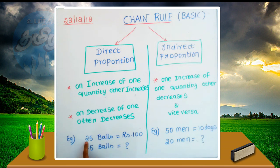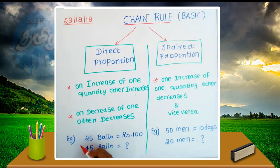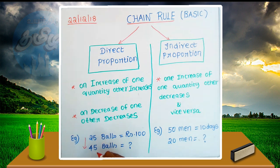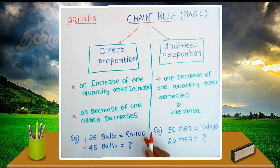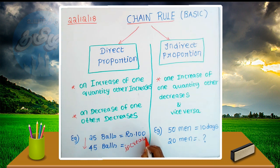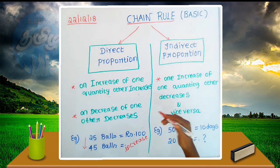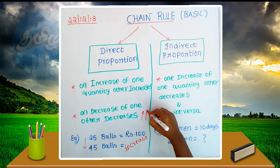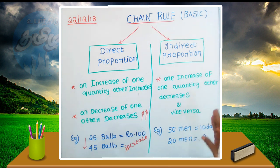For example, there are 25 balls worth 100. Then 45 balls are available. If you look at the ball quantity — when the number of balls increases, the value also increases. That is what we say: if the ball increases, the value will increase. This is a direct proportion.